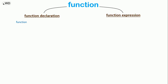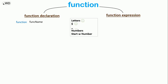For the function declaration, we use the function keyword, then the function name. The function name can include letters, the dollar sign, the underscore, and numbers, but it cannot start with a number. So we write the function name, then parentheses, then we open the curly brackets and type our code inside.